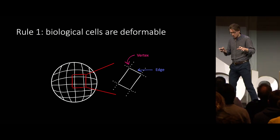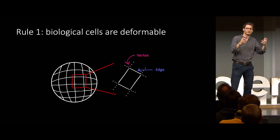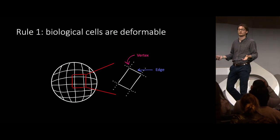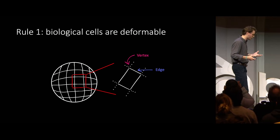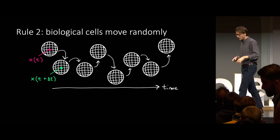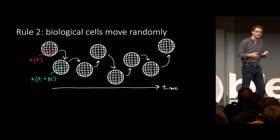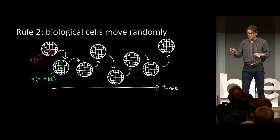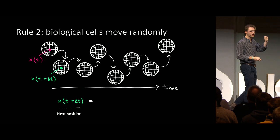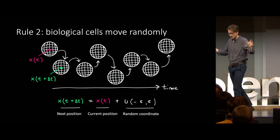We can model cells mathematically using meshes — a collection of vertices connected by edges. Meshes have really high spatial resolution, allowing us to capture precisely the positions and shapes of cells within tissues. Biological cells also move in their environment, and we have observed that one type of movement can be approximated by a random walk — the position of a cell at the next time step can be approximated by the position at the previous time step plus a random coordinate.